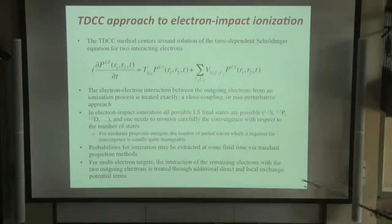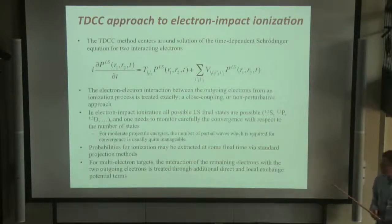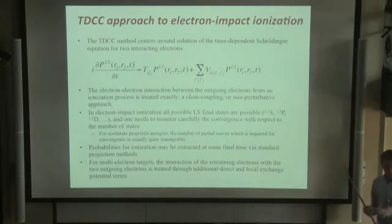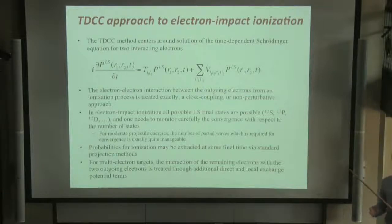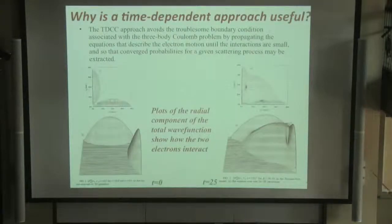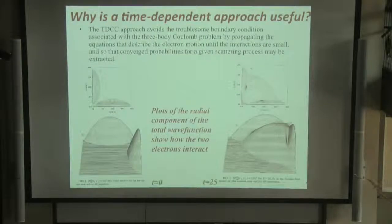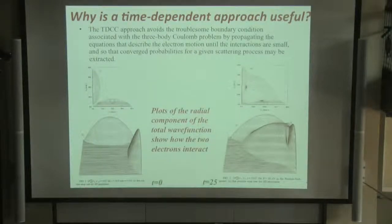For multi-electron targets, the interaction of the remaining electrons — the frozen or inert core — is treated through direct and local exchange potential terms added to a one-electron potential term, mimicking the interaction of the outgoing electrons with the core. The main strength is the interaction between the two outgoing electrons, making this procedure accurate for low-energy systems where the two electrons spend a lot of time interacting as they propagate out. This avoids the troublesome boundary condition associated with the three-body Coulomb problem by time-propagating the Schrödinger equation until interactions are hopefully small, and then extracting the probability via standard projection techniques.